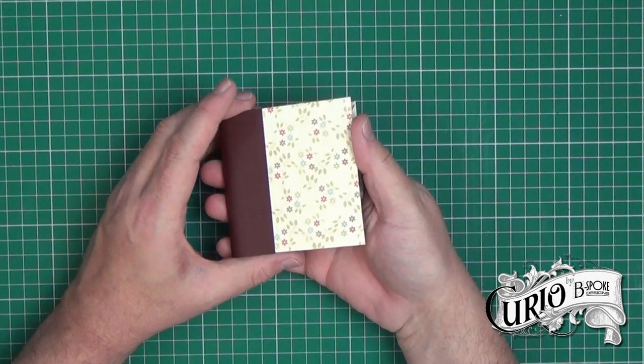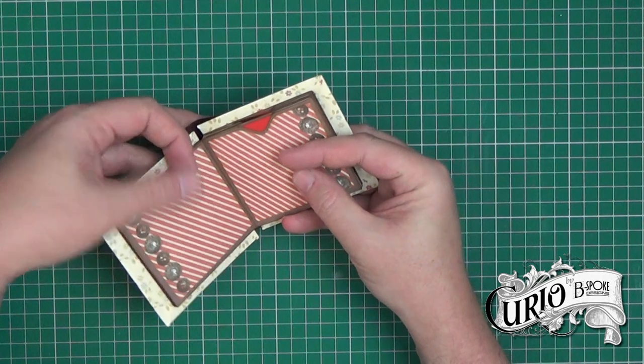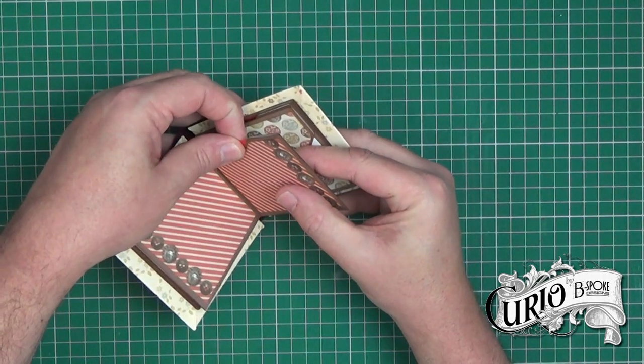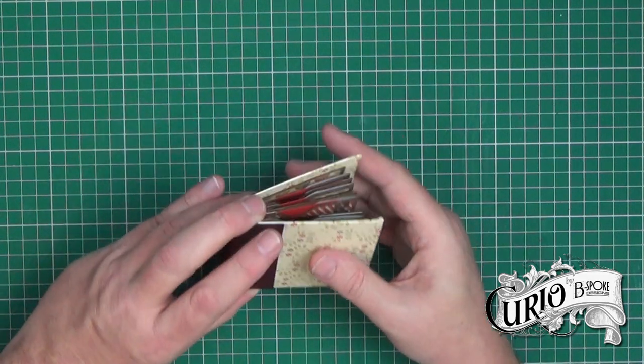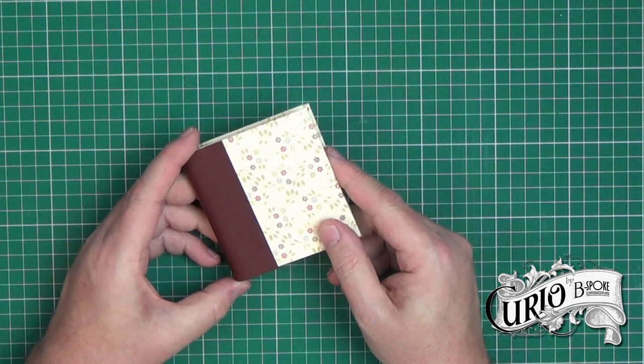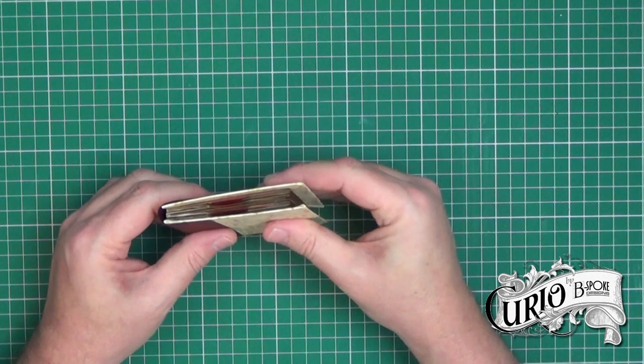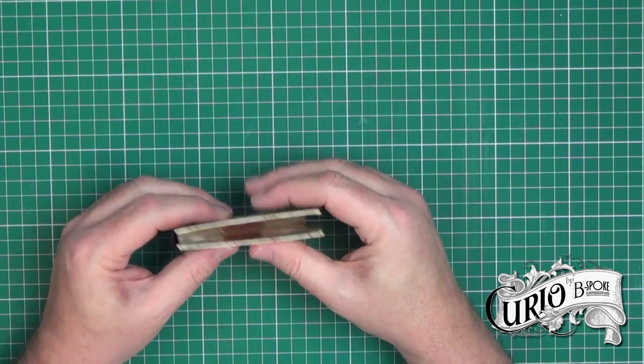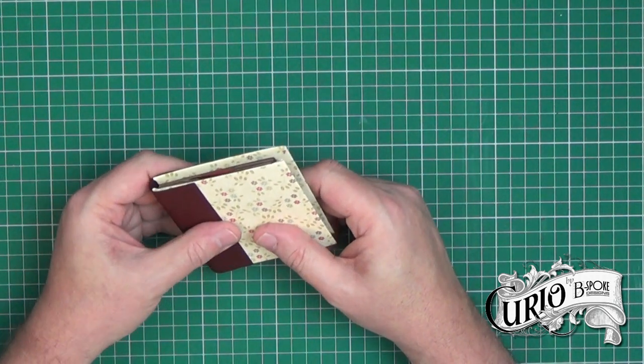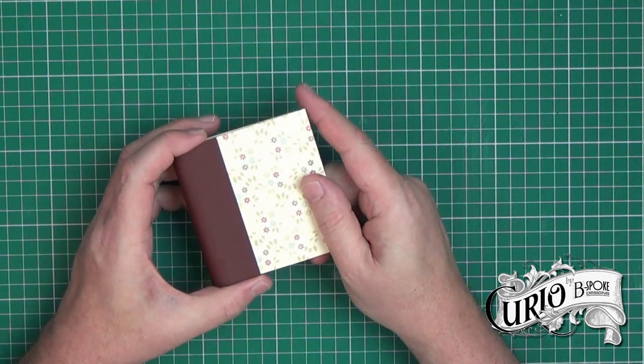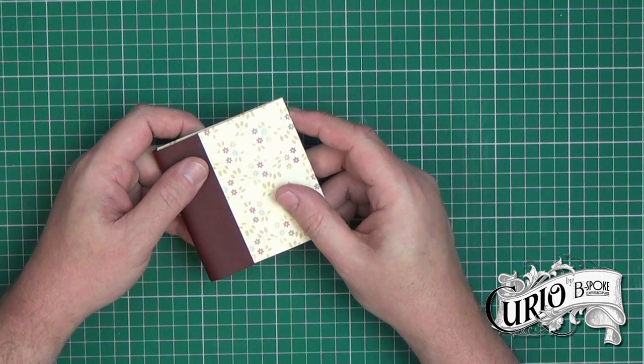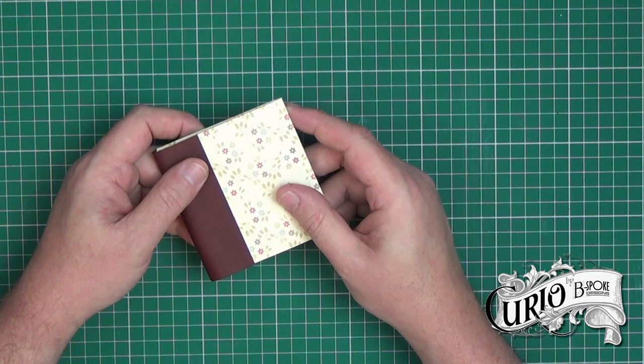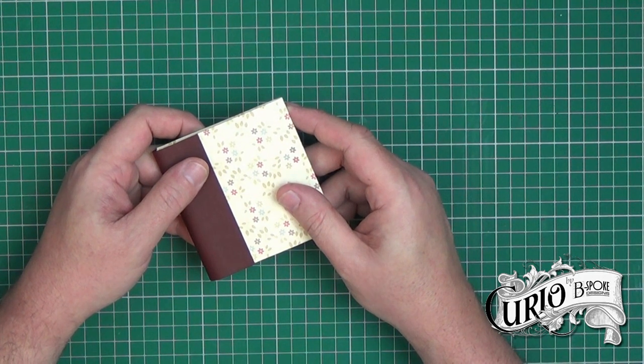And there we have our completed mini journal and you can carry on decorating this as much as you like. I'm going to add some further embellishments to this one and I'm going to use it as part of a giveaway. So if you would like this, the only rules are that you would need to be in the United Kingdom. All you have to do is just place comments below just to say that you would like to receive this and I'll pick one lucky winner at a later date. I hope you've enjoyed this video and found it useful. If you have please give it a like and don't forget to subscribe to see more videos.